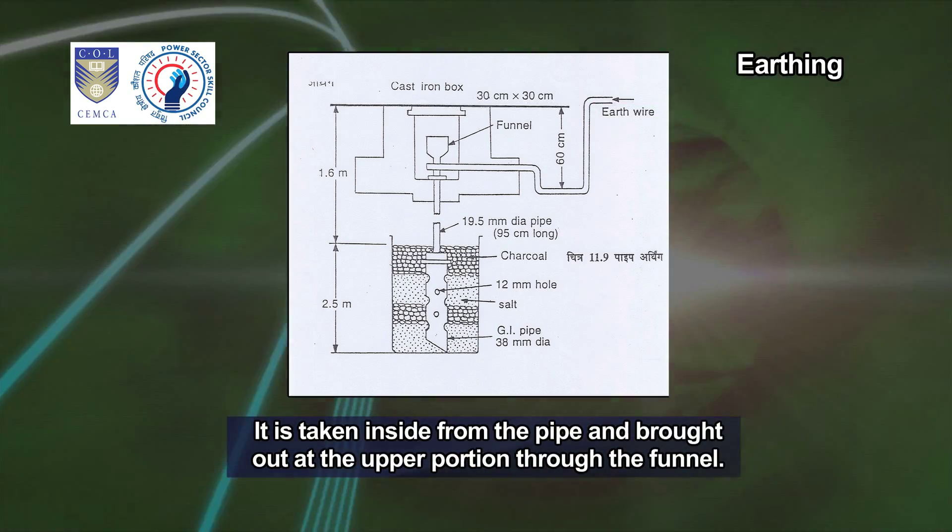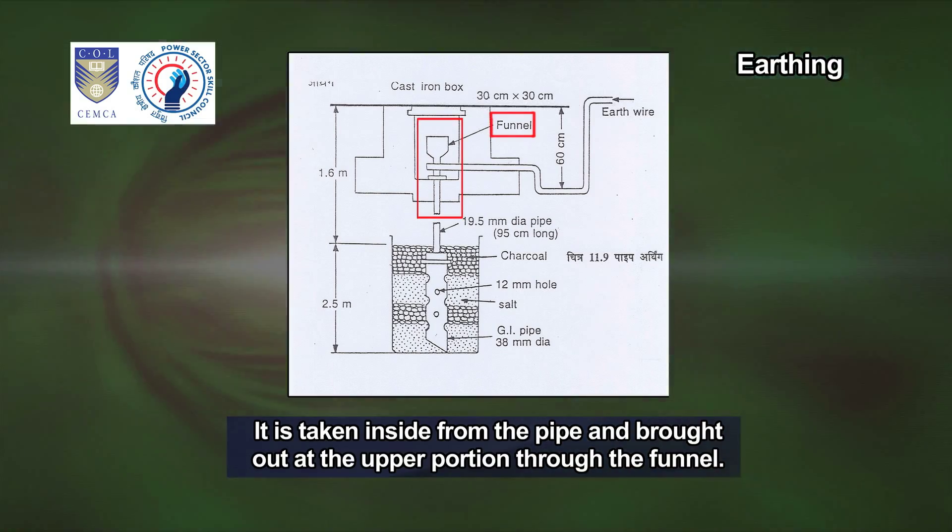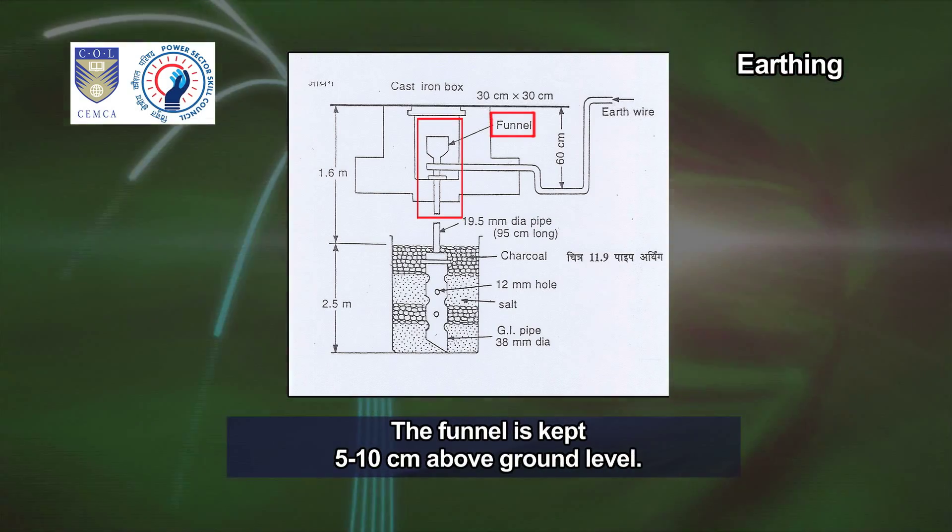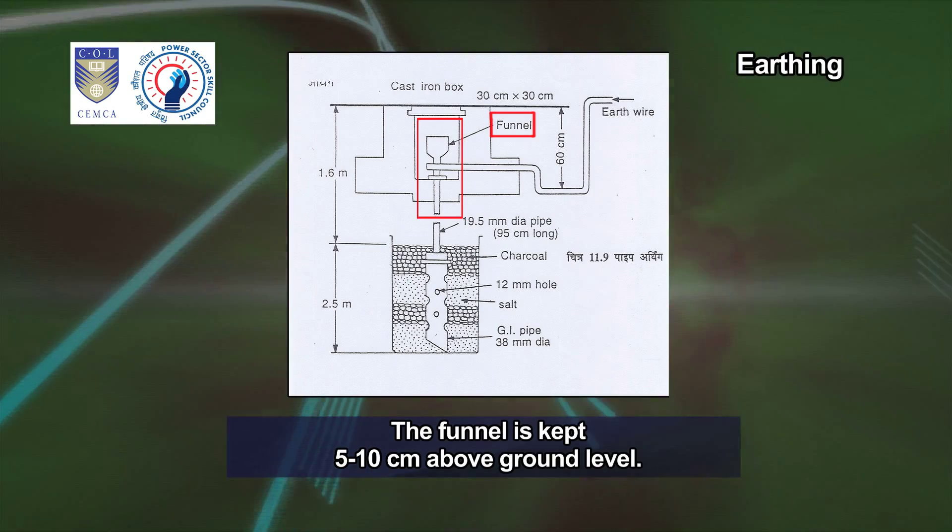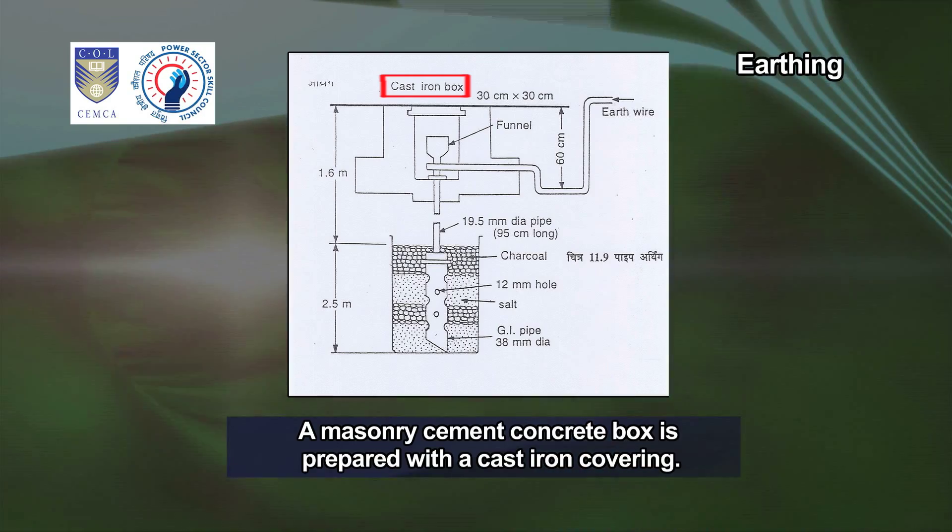The wire is taken inside the pipe and brought out at the upper portion through the funnel. The funnel is kept 5 to 10 centimeters above ground level. A masonry cement concrete box is prepared with a cast iron covering.